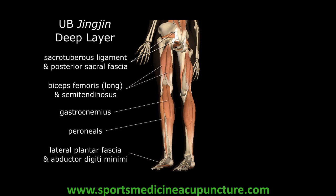The deeper part of the urinary bladder sinew channel is found directly deep to the superficial layer. This layer consists of the abductor digiti minimi in the lateral band of the plantar fascia, the periosteum of the lateral calcaneus, the lateral portion of the Achilles tendon which consists of the gastrocnemius fibers, the gastrocnemius itself, and the two superficial hamstring muscles. These are the biceps femoris long head and the semitendinosus muscle. These superficial hamstrings share fascial attachments with the sacrotuberous ligament and the posterior fascia of the sacrum and the SI joint.